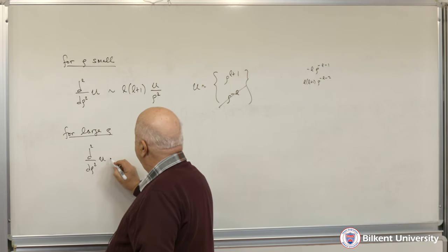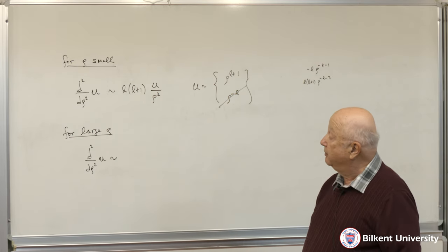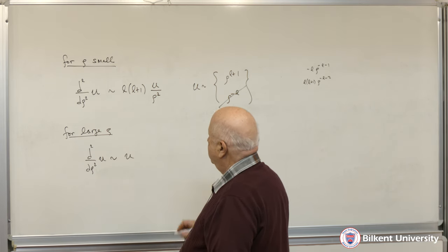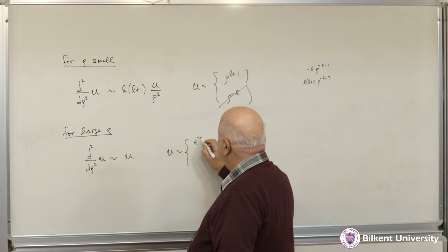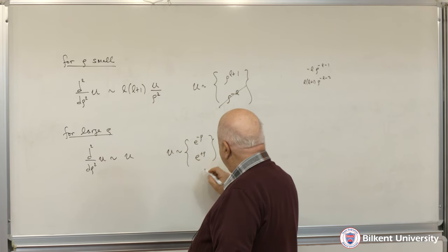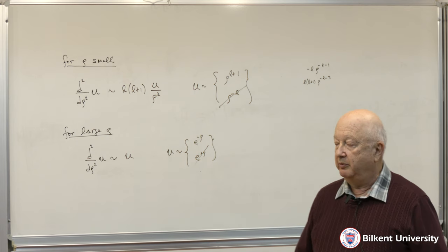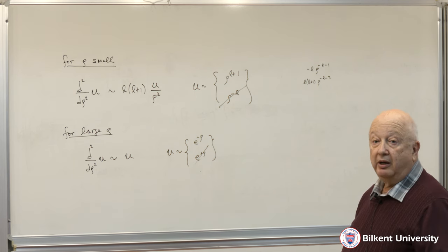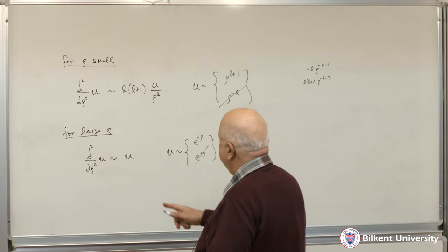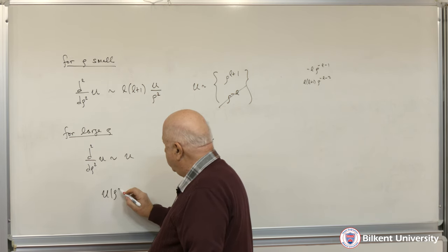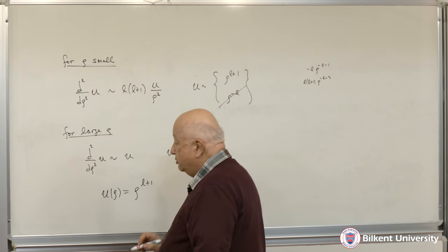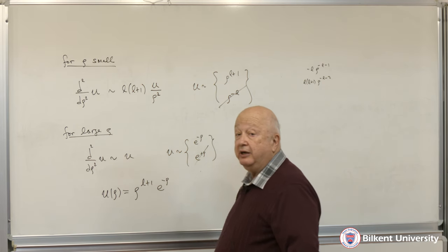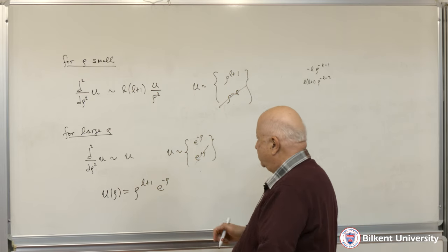For large ρ, the dominant term gives d²u/dρ² ≈ u, which has solutions e^(-ρ) and e^(+ρ). We discard e^(+ρ) because it diverges at infinity. So the asymptotic behavior is u ~ ρ^(l+1) near zero and u ~ e^(-ρ) at infinity.